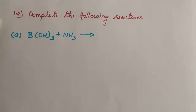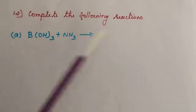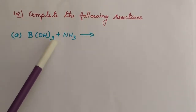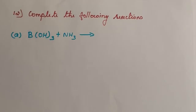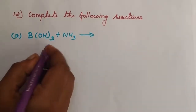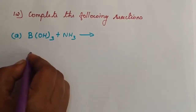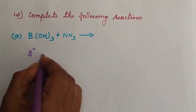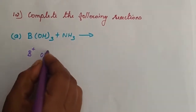See the first question: how do you complete the following reaction? BOH3 boric acid reacts with ammonia. If you split BOH3, you get B plus and OH minus.